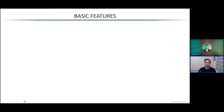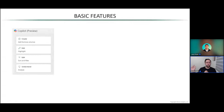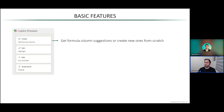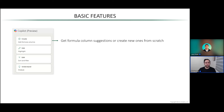Once you launch Copilot in Excel and open that pane, you'll get options including formula column suggestions or creating new formulas from scratch. LLMs are great at writing code — we saw it with Python and SQL — and Excel formulas really are just another coding language. Copilot actually does a great job of writing formulas for you, even some more complex ones like nested IF functions or lookup functions. It can also help you highlight key data points by leveraging conditional formatting rules.